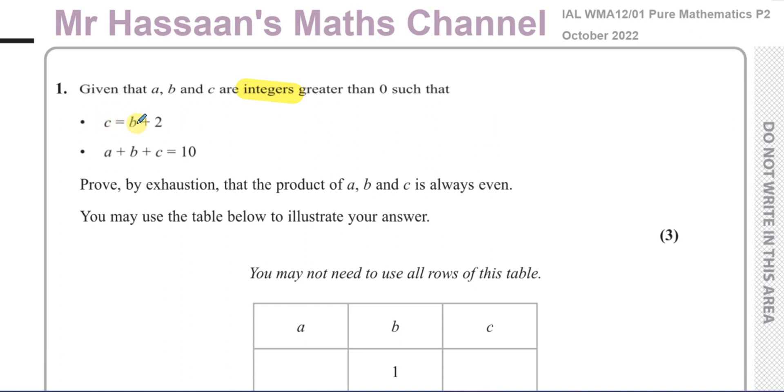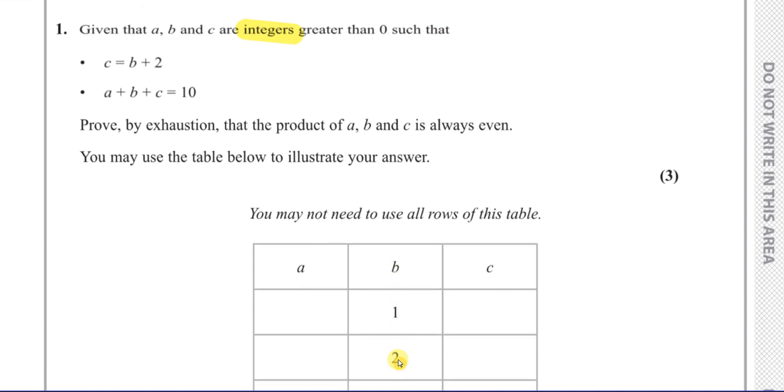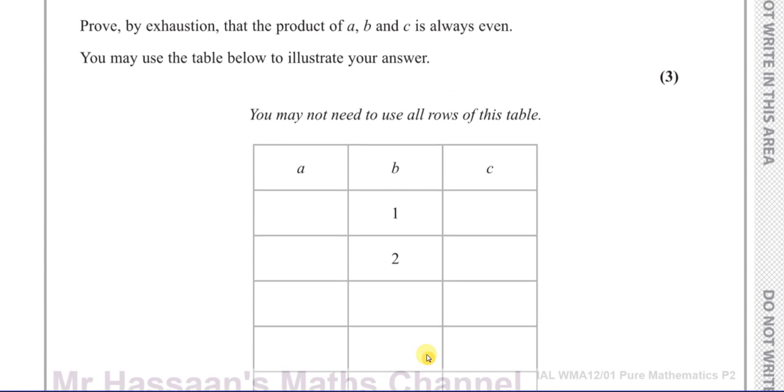Such that C equals B plus two and A plus B plus C equals ten. Prove by exhaustion that the product of A, B and C is always even. You may use the table below to illustrate your answer. In this particular case here, we know that C is always two more than B. And they've kind of helped us out here because they basically said let's start with B equals one.